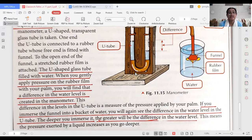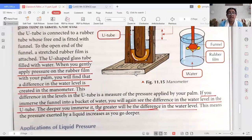You will find that a difference in the water level is created in the manometer. And if we immerse the funnel into a bucket of water, we can see again there is a difference in the water level in the U-tube.